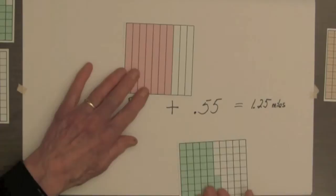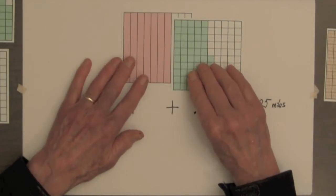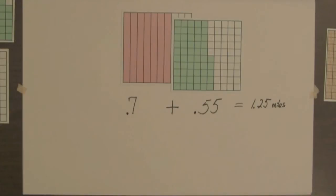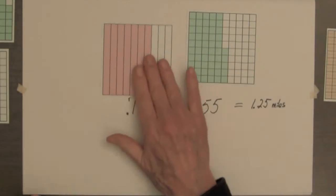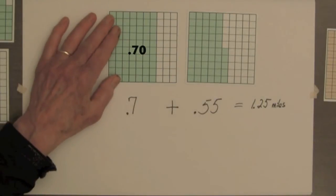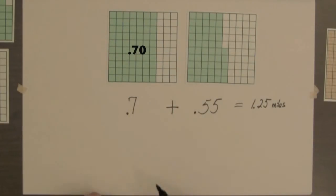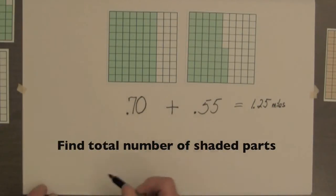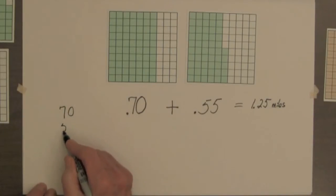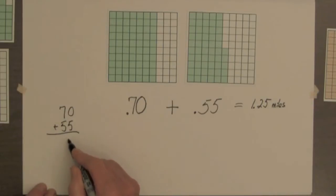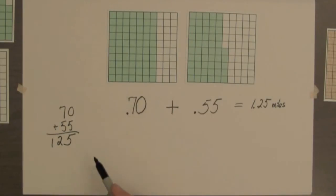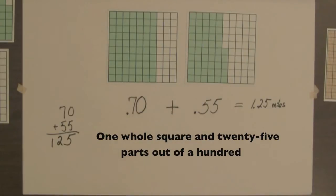Or, as in the first example, we can put the total shaded amounts end to end to see that we have one whole square and twenty-five parts out of a hundred. Another possibility is replacing the seven-tenths square by a seventy-hundredths square — seven-tenths is also equal to seventy-hundredths. Now we can just combine the total shaded amount by adding seventy and fifty-five. Seventy plus fifty-five gives a hundred and twenty-five hundredths, which is one whole square and twenty-five parts out of a hundred.